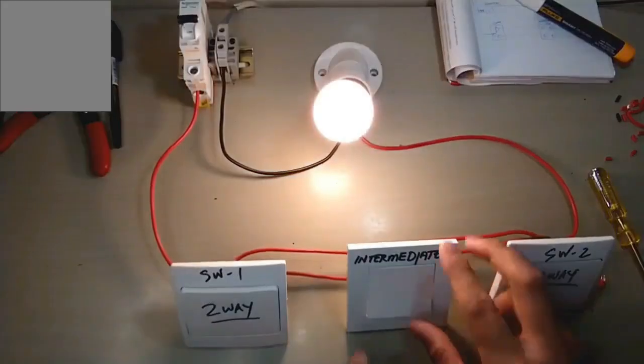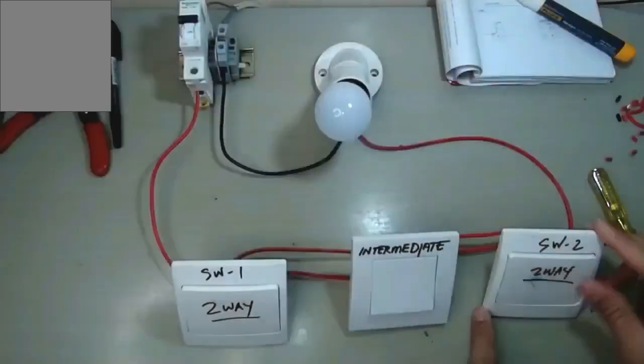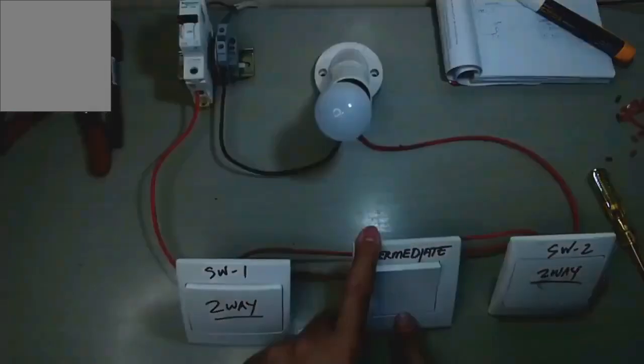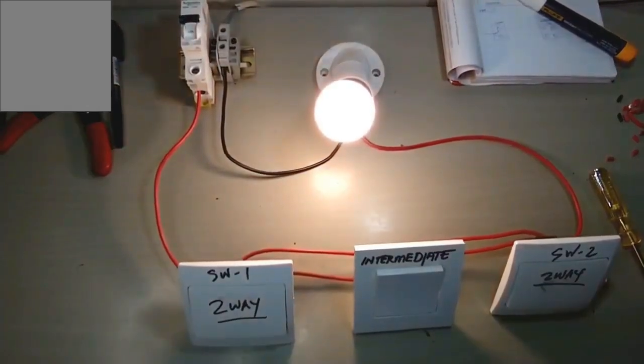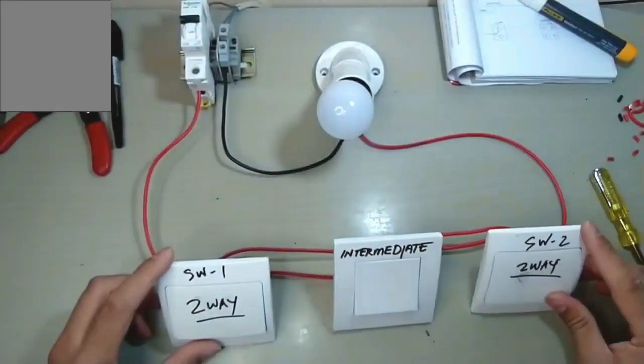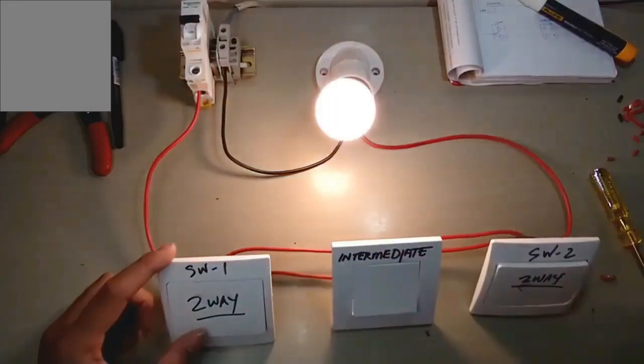When the circuit is open, no current can flow. When it is closed, the circuit is complete and electricity can flow to operate a device. Switches are essential for controlling the operation of almost all electrical devices, from simple light switches to complex controls in heavy machinery.